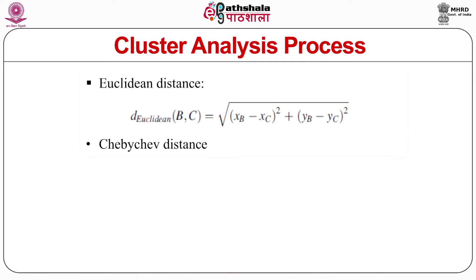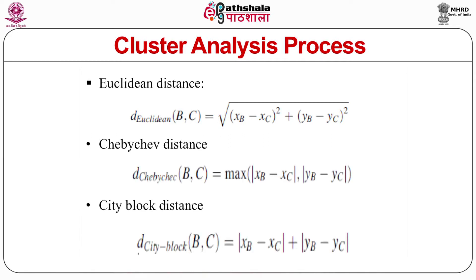The second decision within hierarchical clustering is to choose the measure — Euclidean distance, Chebyshev distance, or city block distance. Cluster analysis is about measuring the distance between cases; those with minimum distance are clubbed into one cluster. There are three methods of measuring distance: Euclidean distance, Chebyshev distance, and city block distance, with formulas observable on screen. Out of these three, the Euclidean distance is the most commonly used method for cluster analysis.